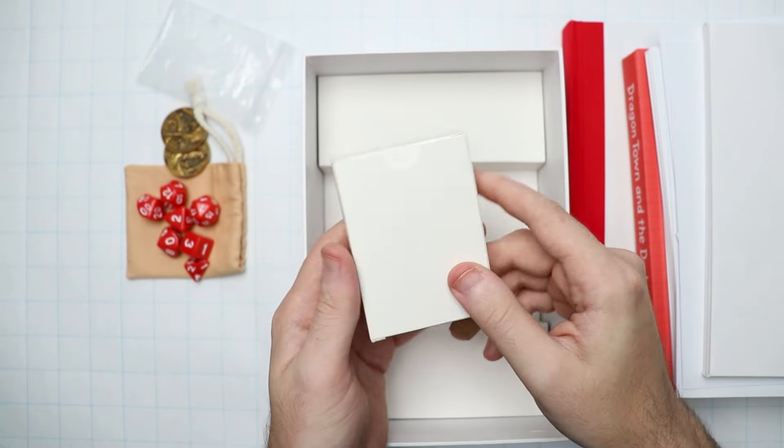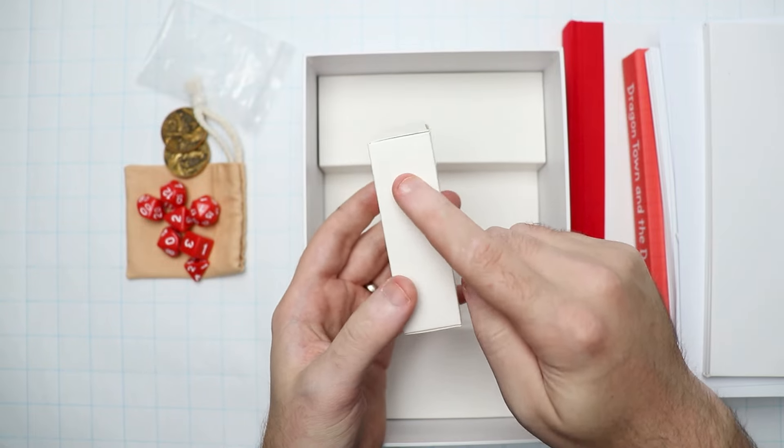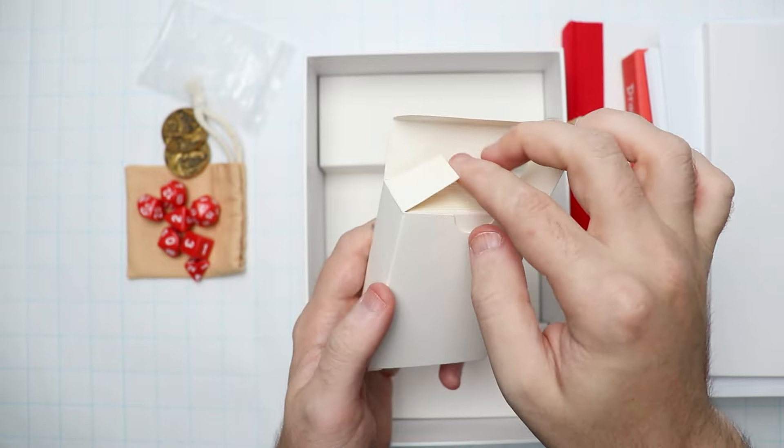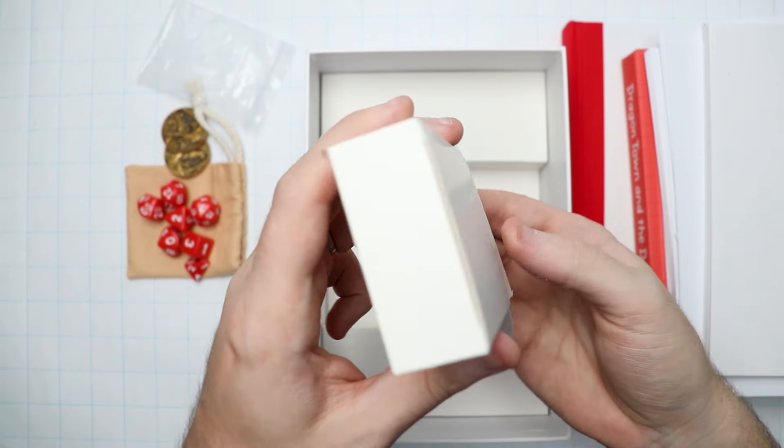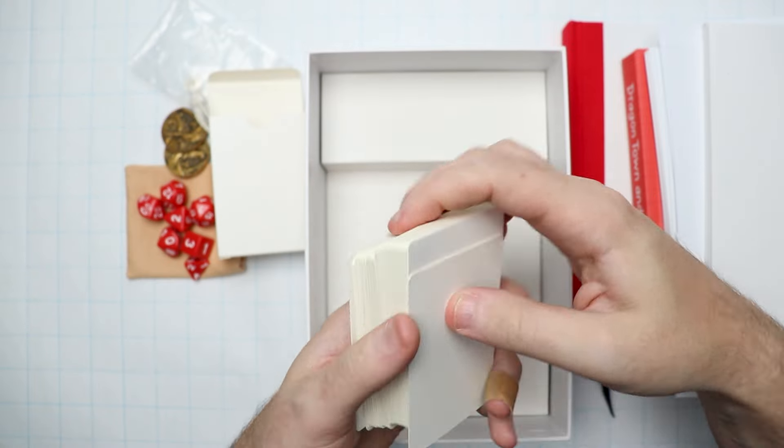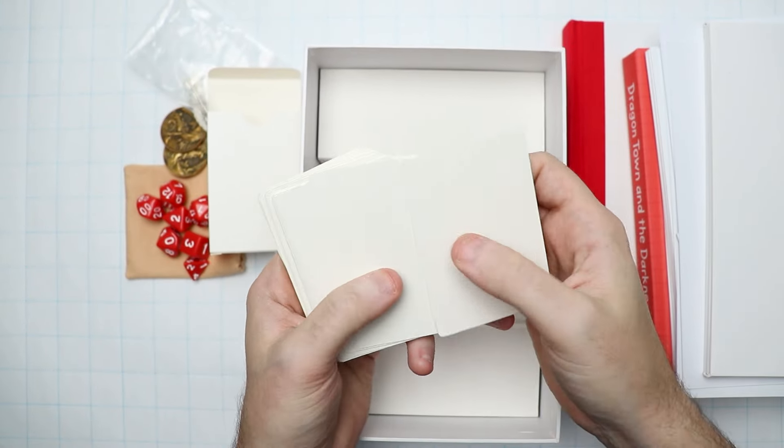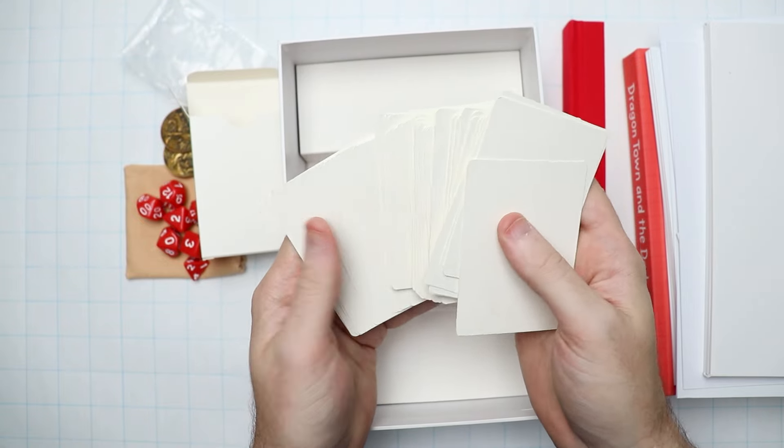And then there are the magic item cards. So we haven't unlocked the tuck box for the magic item cards yet, but we're getting close. So that's the next stretch goal. And yeah, then it's going to be this big fat stack of 52 magic item cards. Obviously blank again.